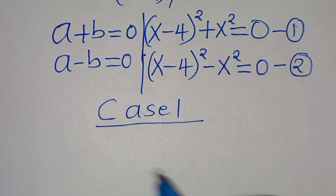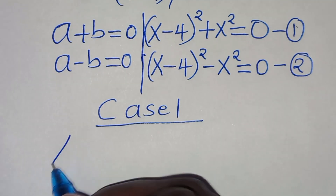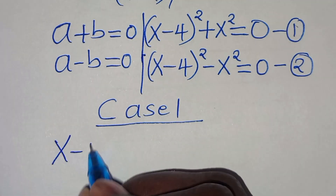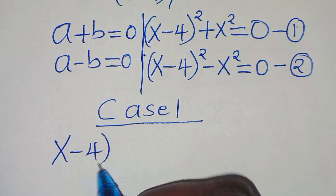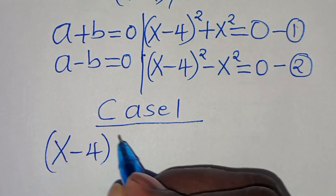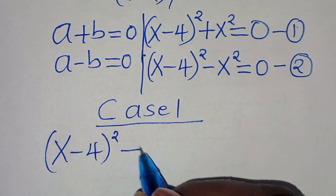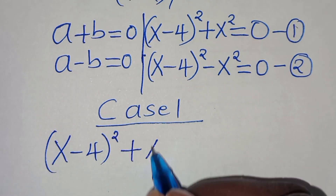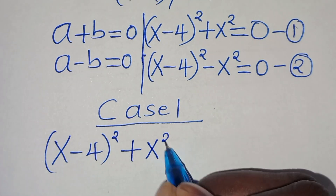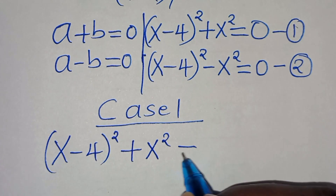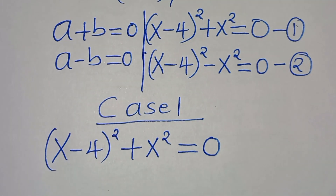In case 1, we have (x subtract 4) raised to the power of 2 plus x to the power of 2, and this is equal to 0.